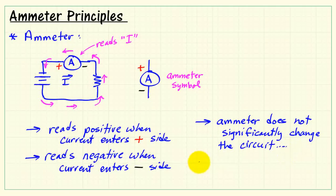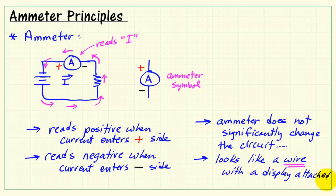Now again, the ammeter does not significantly change the circuit. It really looks just like a wire with a display attached. Therefore, it has very low electrical resistance.